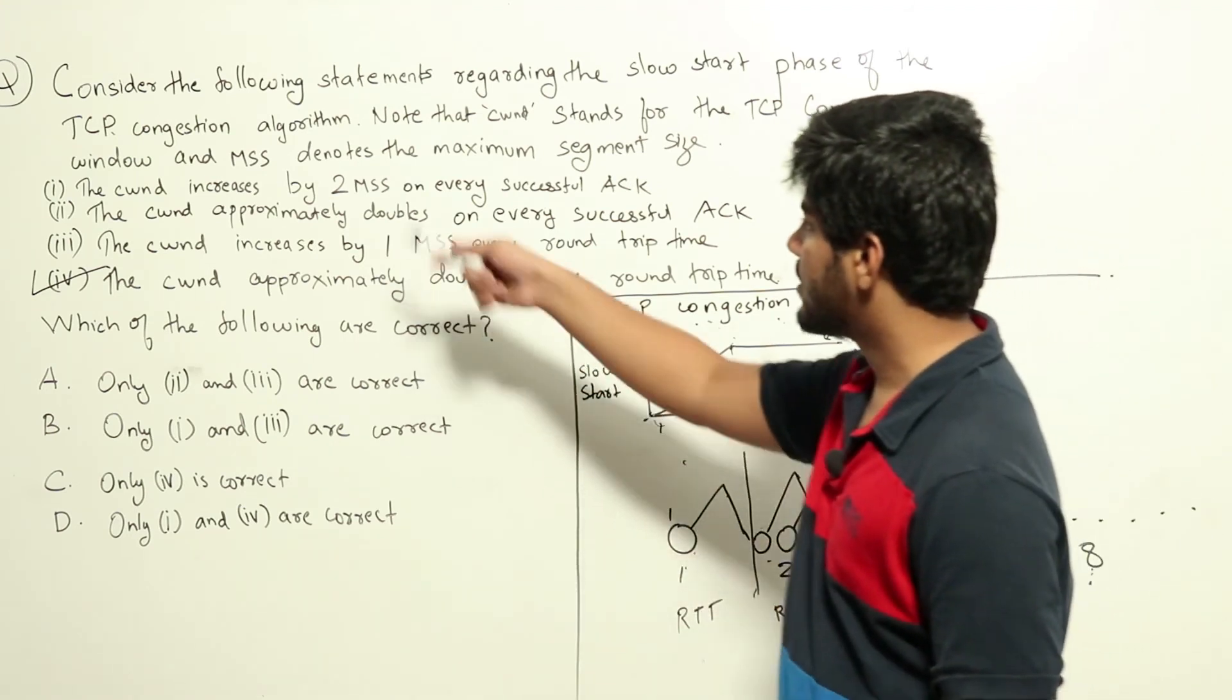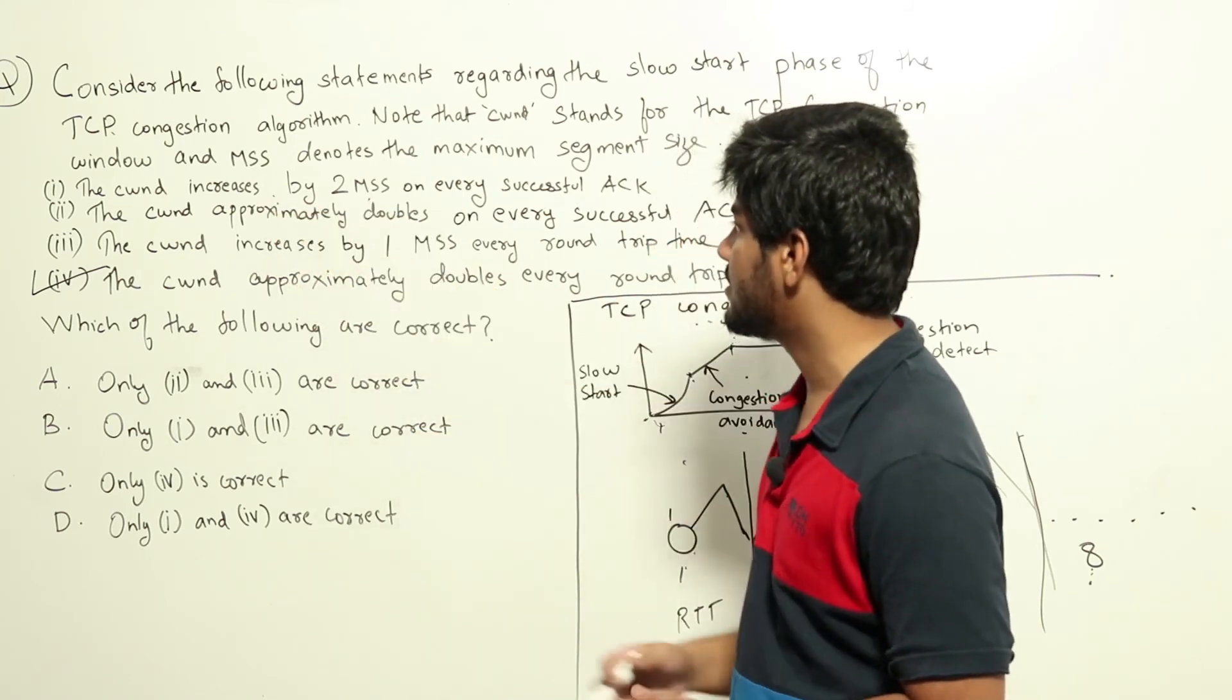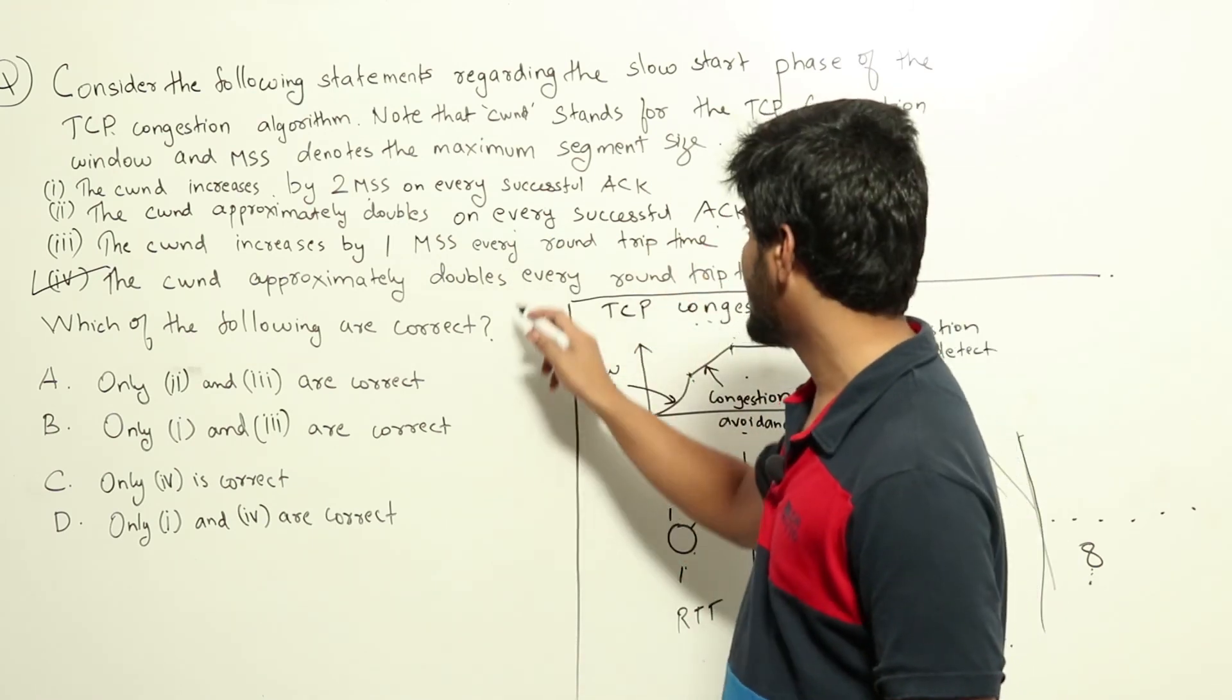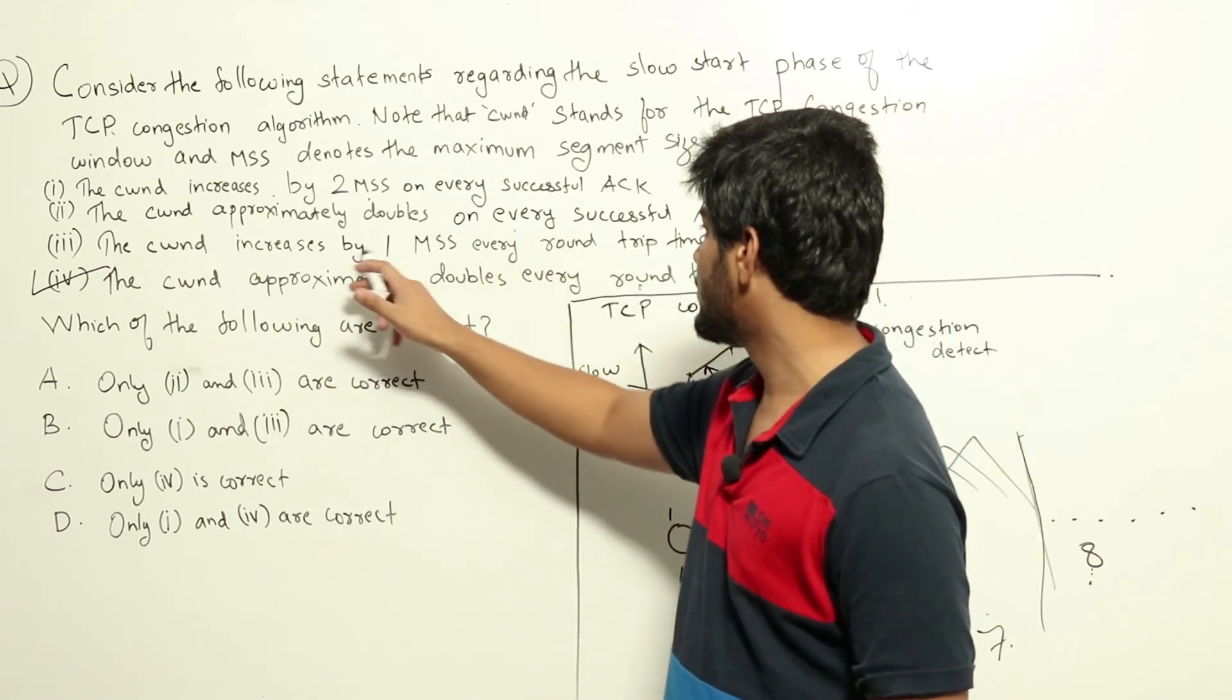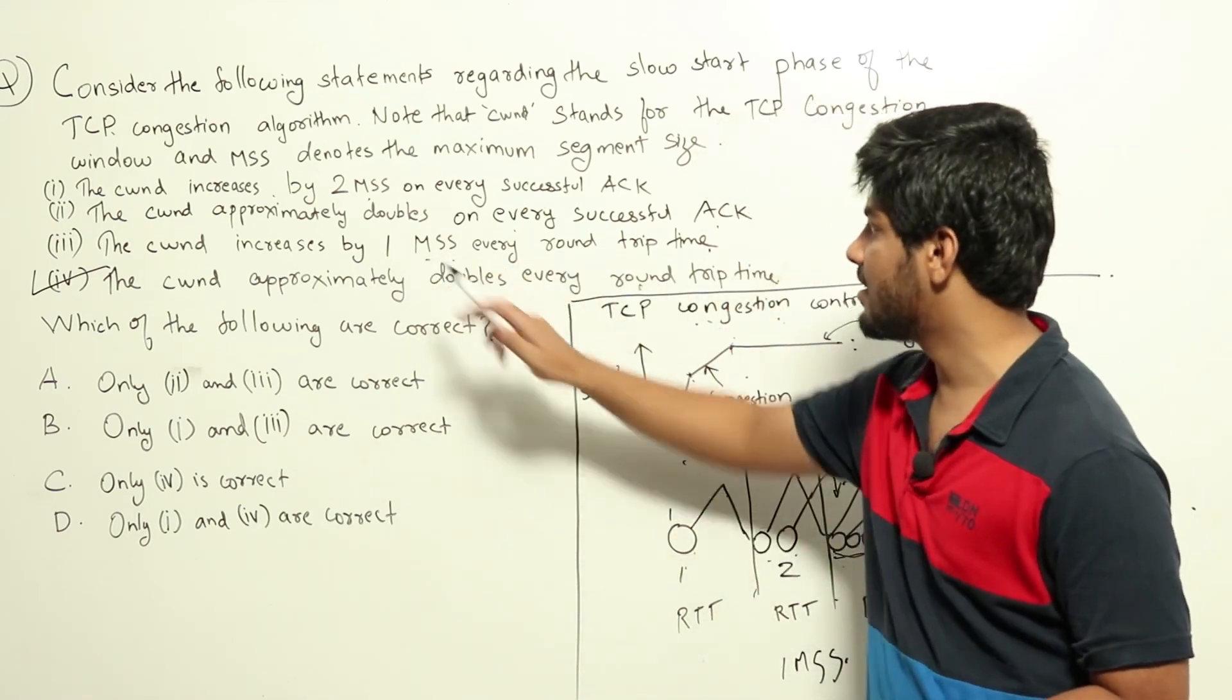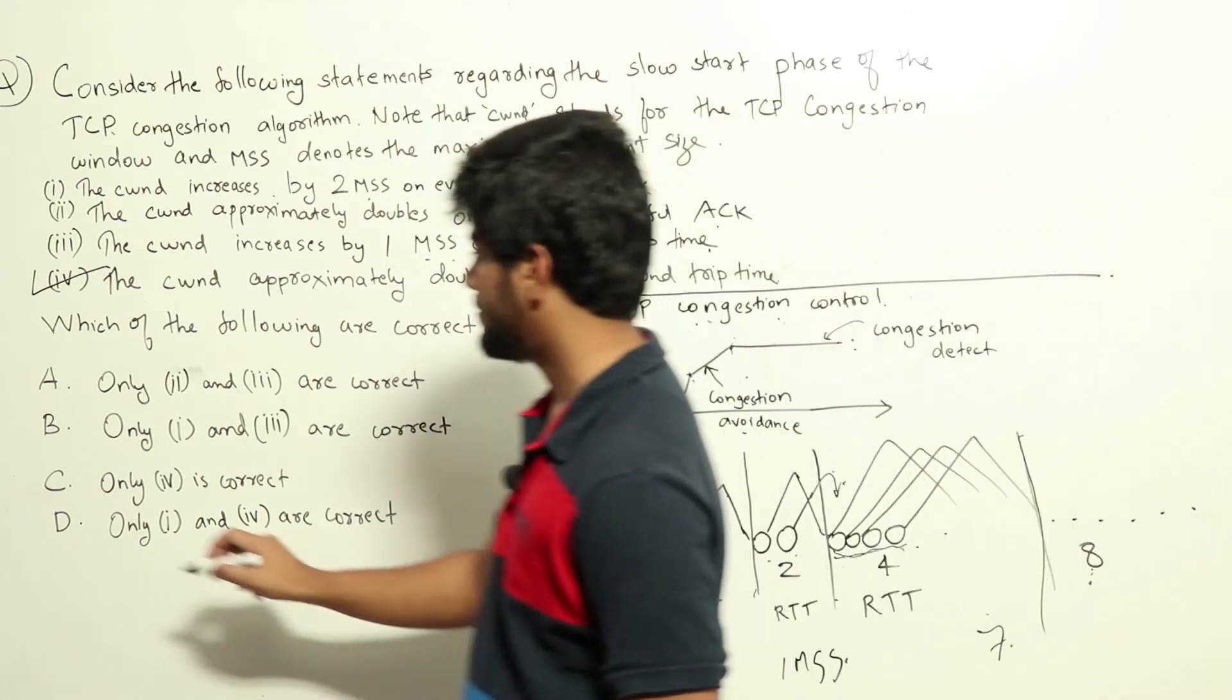So there is none of the other options here which is correct. Here it's saying congestion increases by two MSS - that is false. Approximately doubles on every ACK - that's also false. It doubles on every round trip time. Increases by one MSS on every round trip time - that's also false. It increases by one MSS after every ACK. So only four is the correct answer. Thank you.